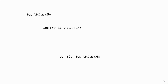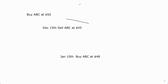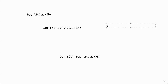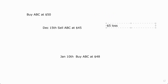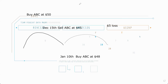In this case, we bought this stock at $50 and then on December 15th we sold it at $45. So what do we have here? We have a five dollar loss. Depending on how much money that is, how many shares we have, we can use that loss to reduce our income — whether it's capital gains or ordinary income — up to three grand a year.